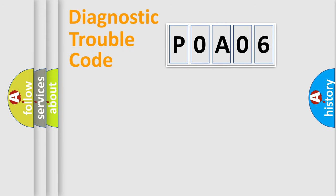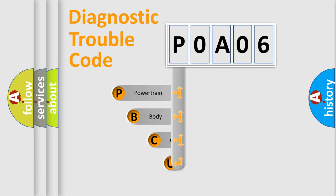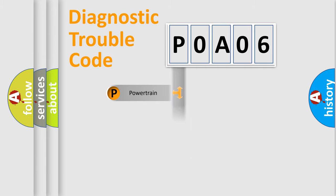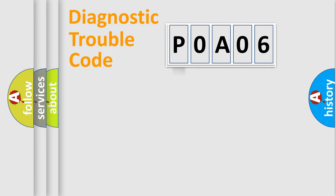Let's look at the history of diagnostic fault code composition according to the OBD2 protocol, which is unified for all automakers since 2000. We divide the electric system of an automobile into four basic units: Powertrain, Body, Chassis, and Network.